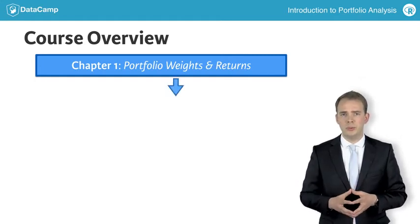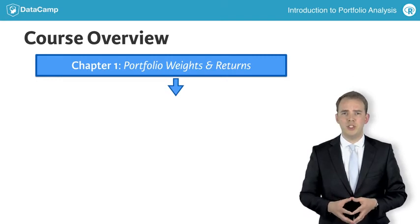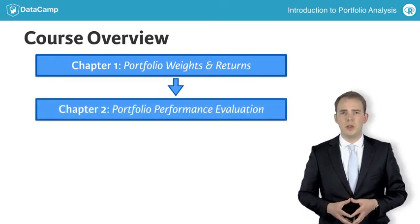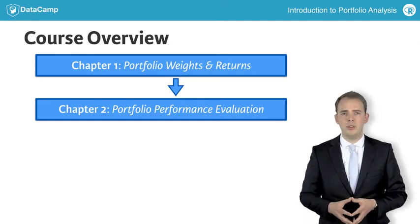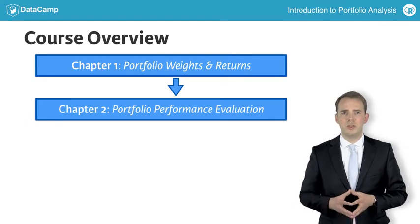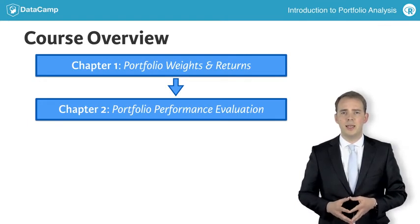In chapter 2, you will learn how to use measures of reward and risk to evaluate the portfolio performance. We will be using average returns, volatility, Sharpe ratio, and even downside risk measures, such as the portfolio value at risk and expected shortfall.